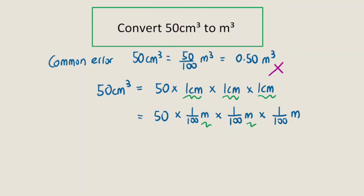So 1 cm is 1 over 100 m. Then each of the meters here will combine to form m³. And then we'll use the calculator to calculate 50 times 1 over 100 times 1 over 100 times 1 over 100, and we should get 5.0 times 10 to the power of minus 5 m³.